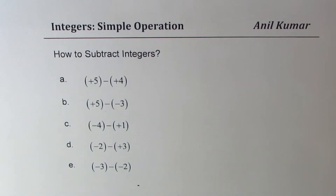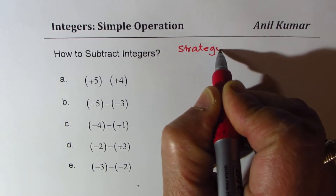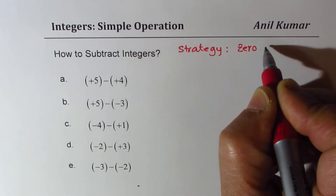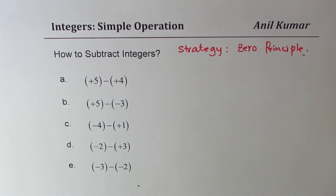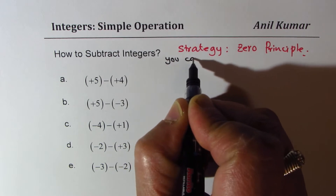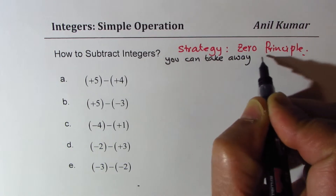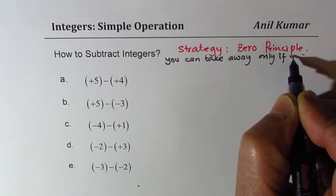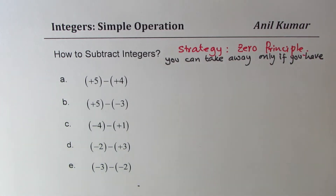I'm Anil Kumar. In this video, we will learn a strategy to subtract integers. The strategy here is basically the zero principle. The idea is that you can take away only if you have. Remember this — you can take away only if you have. That is the base. So we have five examples.